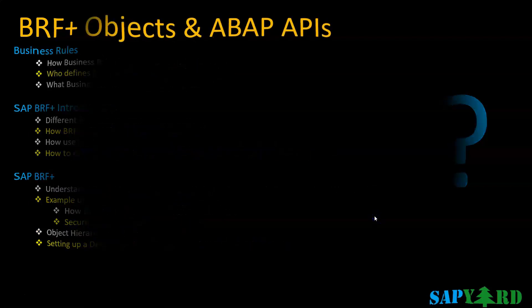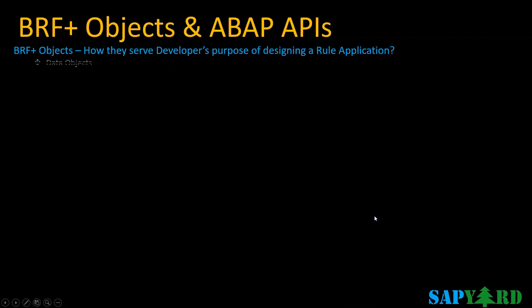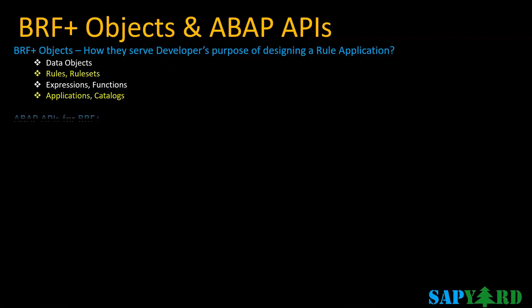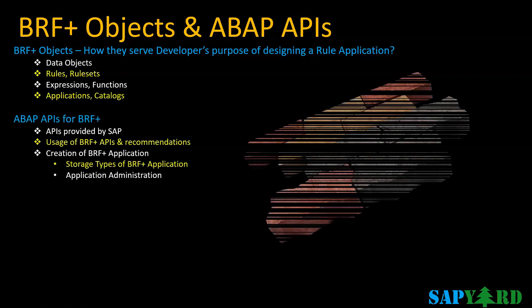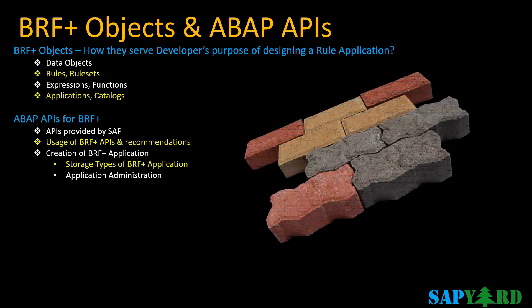There has to be a building block for everything. Data objects describe the data types and at the same time serve as the data carriers in the context or the result. Just like in ABAP data dictionary, we have data elements, structures, and table types. Similarly, in BRF Plus data object types, we have element, structure, and table.